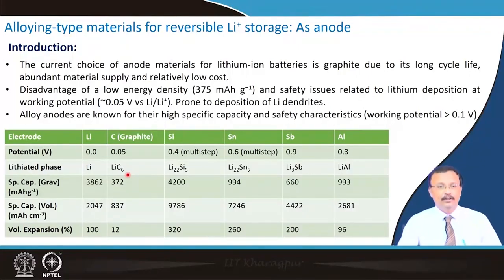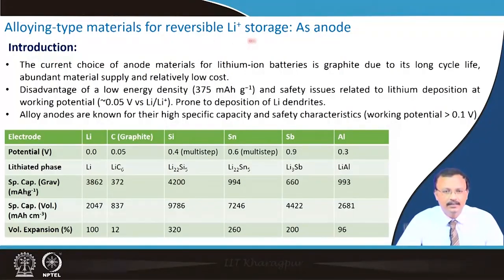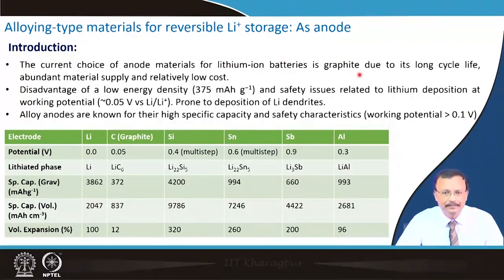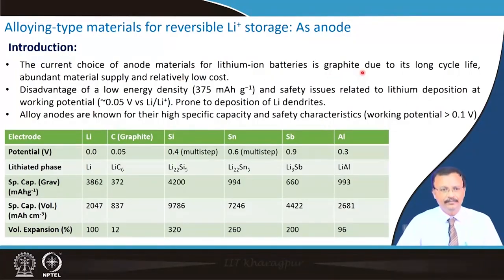These alloy-type materials are useful for reversible lithium storage, and we will use them as anode because of their potential criteria. The current choice of anode material for all commercial batteries is graphite or MCMB, mainly due to their reasonably long cycle life. The materials are cheap and have low cost, so it is economical to use them.